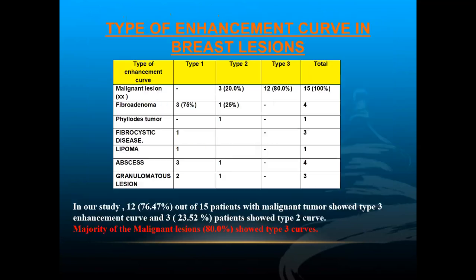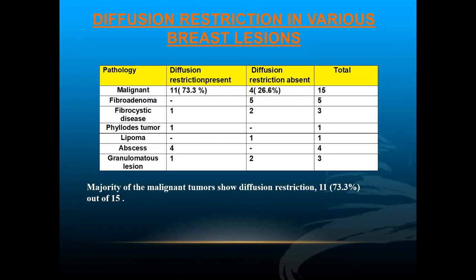Regarding kinetic curve types: Type 3 enhancement curves were most commonly seen in malignant lesions — 80% of malignant patients, that is 12 out of 15. Three patients showed Type 2 enhancement curves. In summary, most malignant lesions showed Type 3 curves. Diffusion restriction was predominantly seen in malignant tumors.